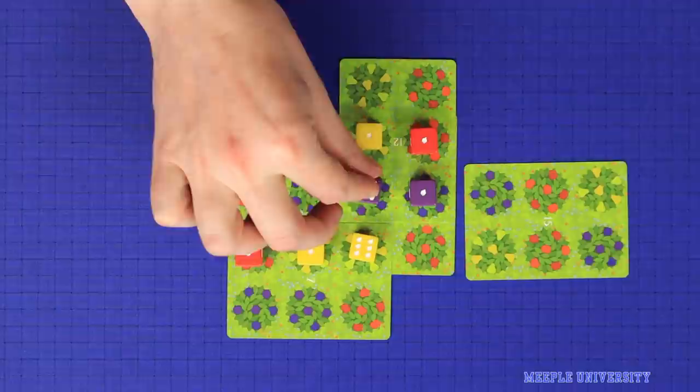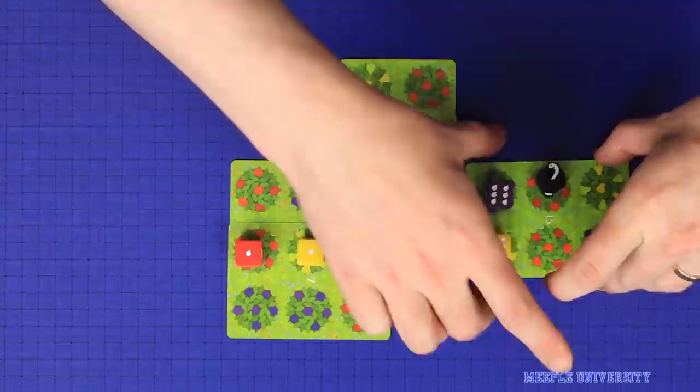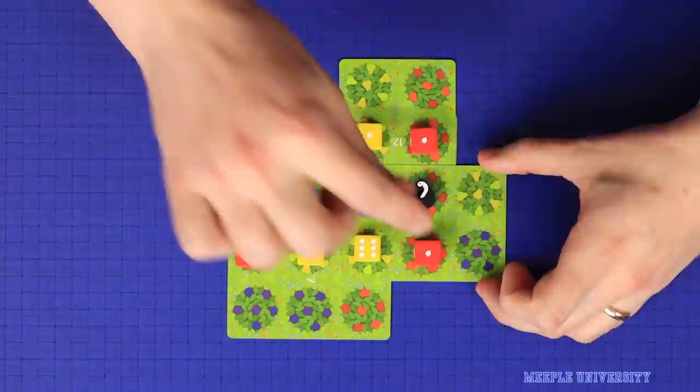I will increase the score on the 2 existing dice that match, but remove any dice on the non-matching space and replace it with rotten fruit. Then I will overlap the card like so and place the 1 scoring red die to finish the move.